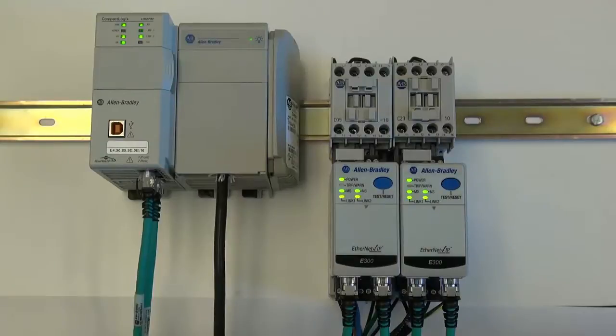The E300's Ethernet IP communications module has two Ethernet ports. The two ports act as a switch, allowing the E300 to participate on a linear network, a star network, or a device level ring.